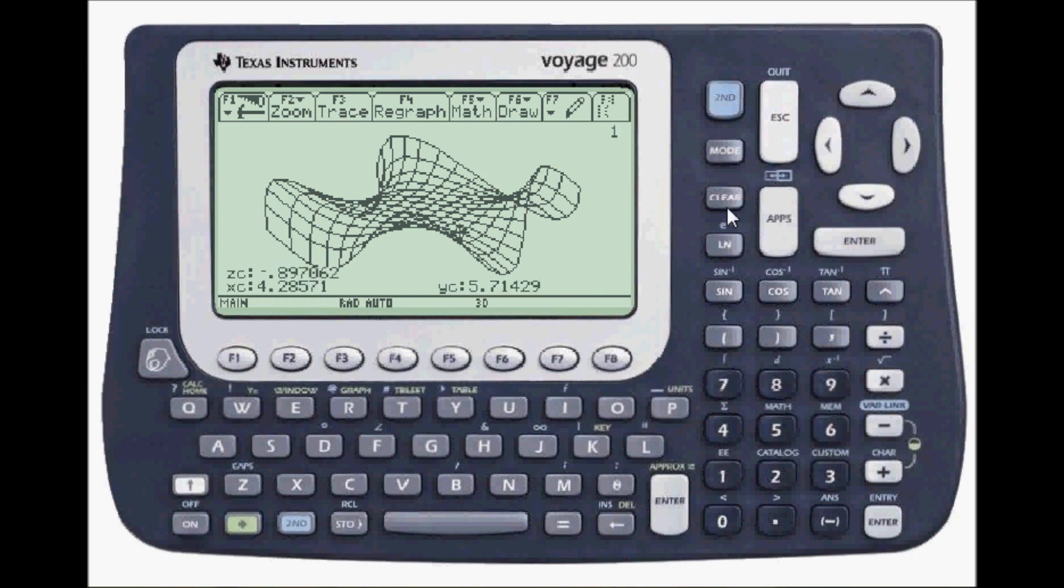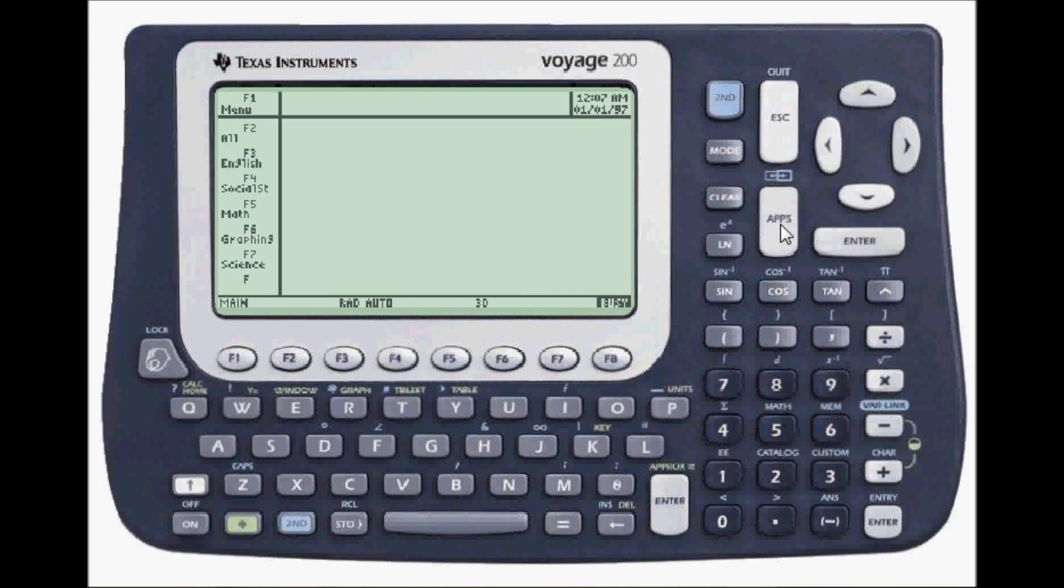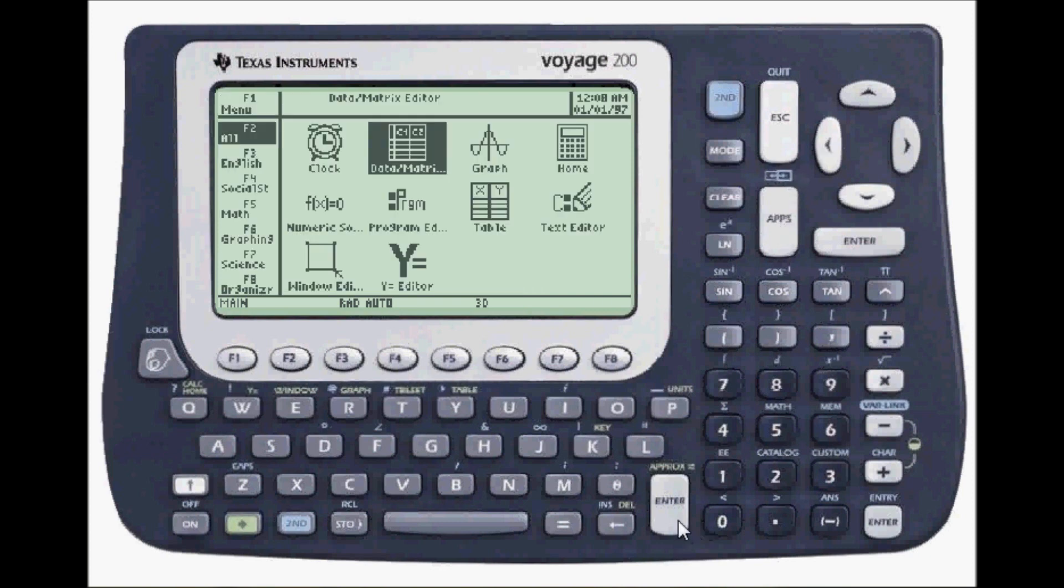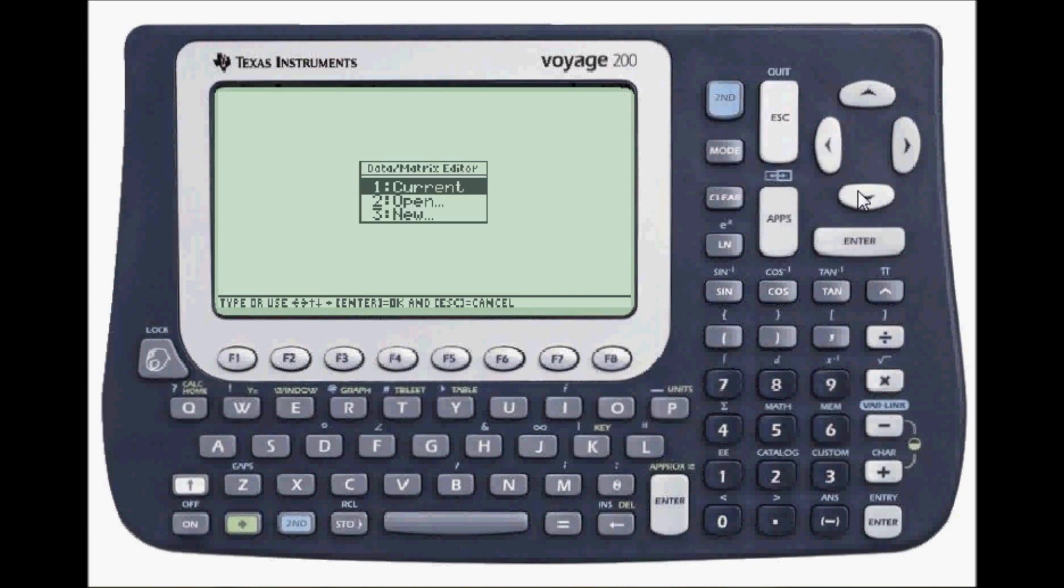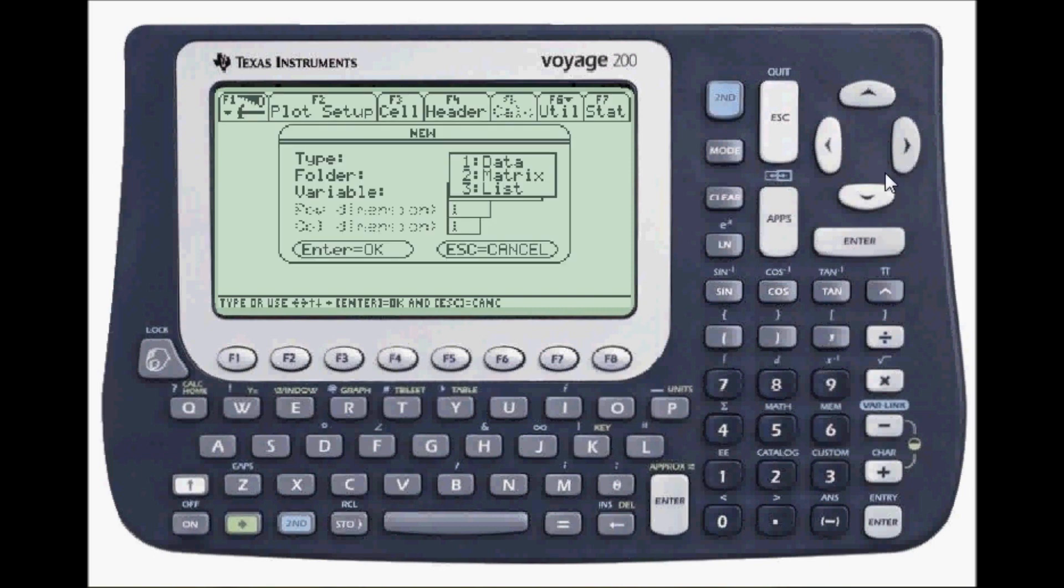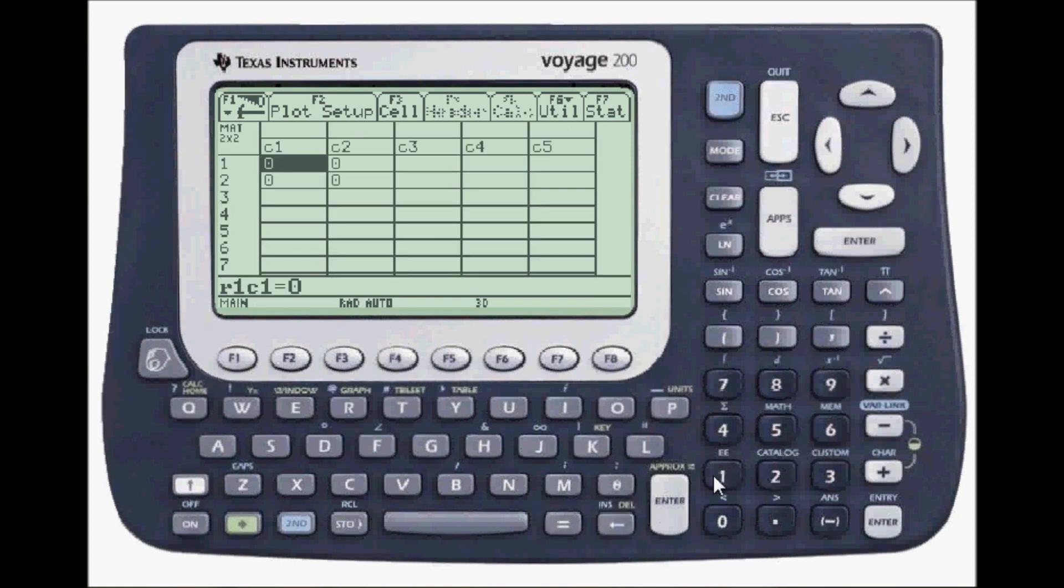And now to finish, I'm going to go to apps, data matrix. I'm going to create a new matrix, so press enter. Matrix will be the type, scroll down to matrix. And you'll want to name it. I'll name mine B. I'll make it a 2x2 matrix. Press enter and here's my elements. I'll have 1, 2, 3, 4, just for example.